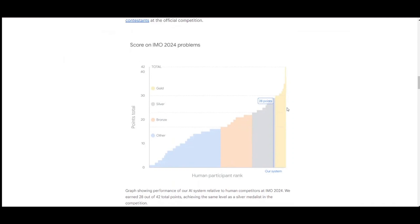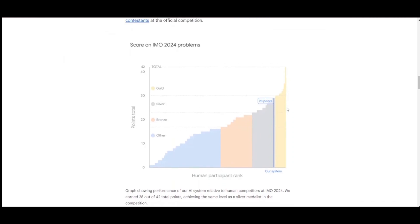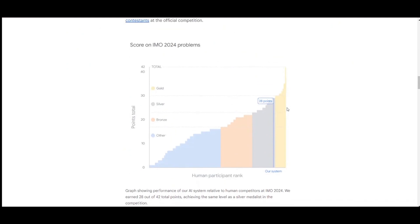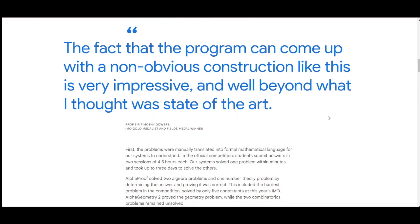AlphaProof solved two algebra problems and one number theory problem by determining the answer and proving it was correct. This included the hardest problem in the competition, solved by only five contestants at this year's IMO. AlphaGeometry 2 proved the geometry problem, while the two combinatorics problems remained unsolved.